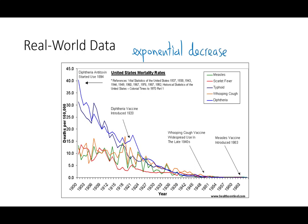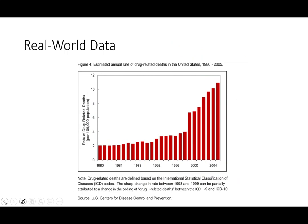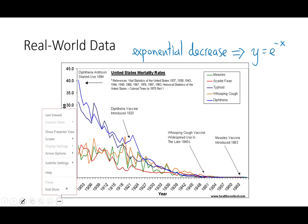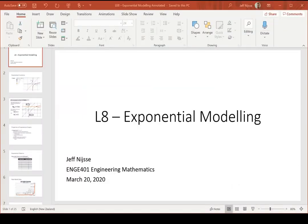All of these are exponential, but they show a decrease — before we had an increase. These all experience exponential decline, decay, or decrease — different words for the same behavior — and we can model it as an exponential function. The way to get a decrease is to have y equals e to the negative x.